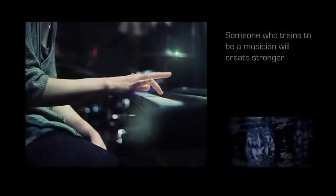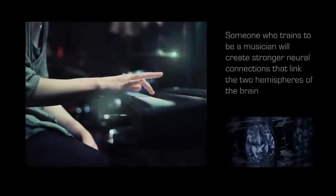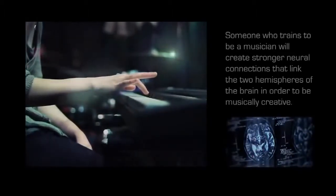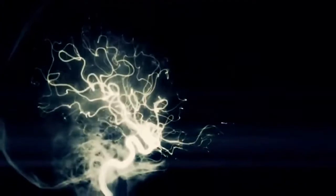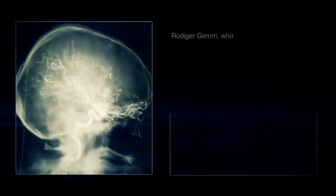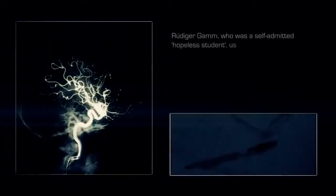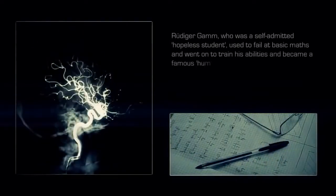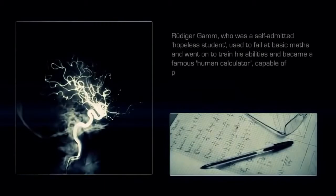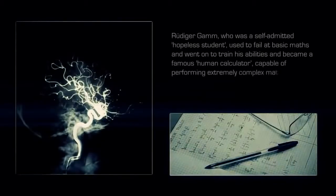Someone who trains to be a musician will create stronger neural connections that link the two hemispheres of the brain. Virtually any sort of talent or skill can be created through training. Rudiger Gamm, who was a self-admitted hopeless student used to fail at basic math and went on to train his abilities and became a famous human calculator.